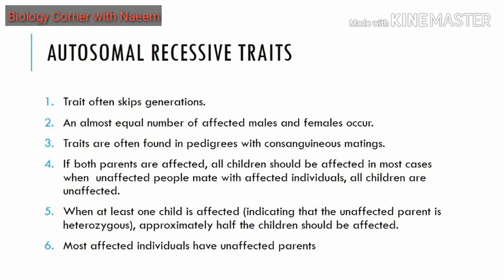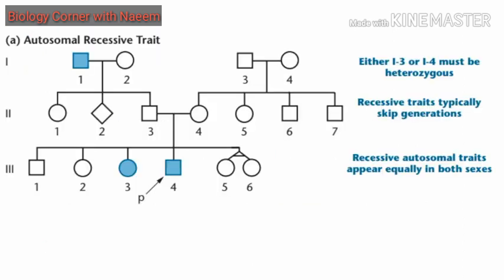Similarly, most affected individuals have unaffected parents. Why? Because it is rare for two affected people to come across and marry each other. You will now pause this video and solve the pedigree to find the genotypes of all individuals shown. I will do a separate video with a step-by-step guide to solving a pedigree.